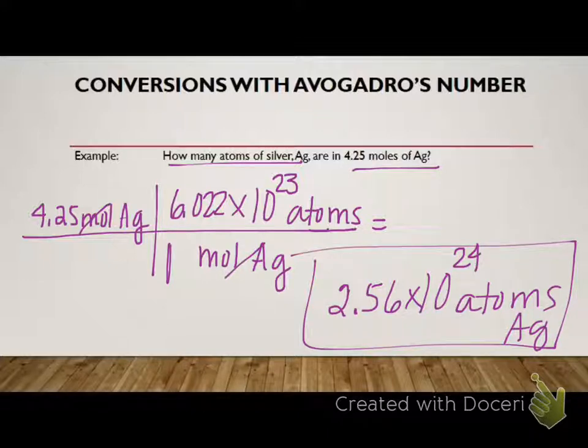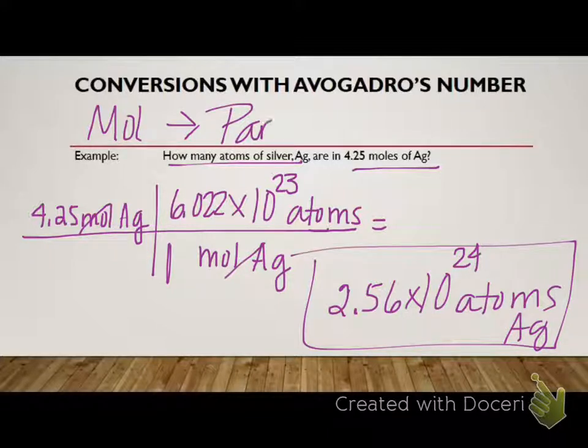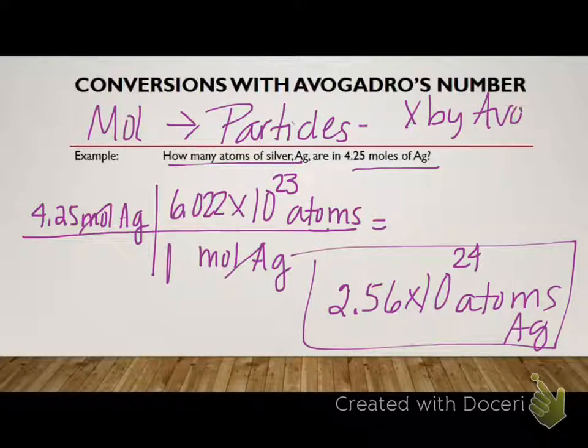So when I want to go moles, I don't have enough room, but if I want to go moles to, I'm going to say particles here because sometimes it's atoms, sometimes it's molecules. I'm going to multiply by Avogadro's number. I'm going to abbreviate that. A lot of people call Avogadro's number Avocado's number. That's done every year.